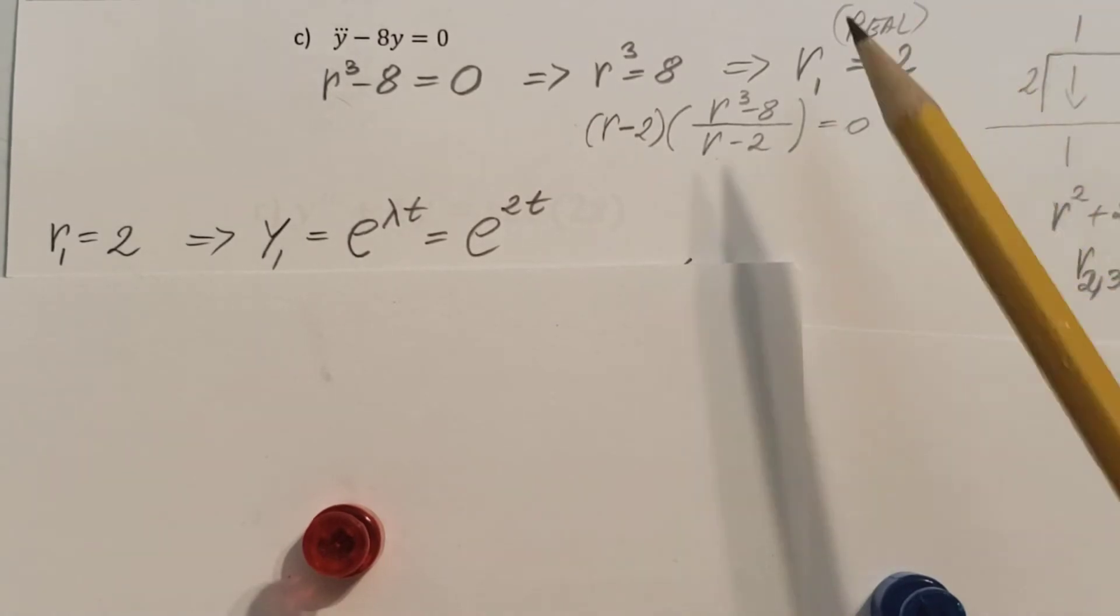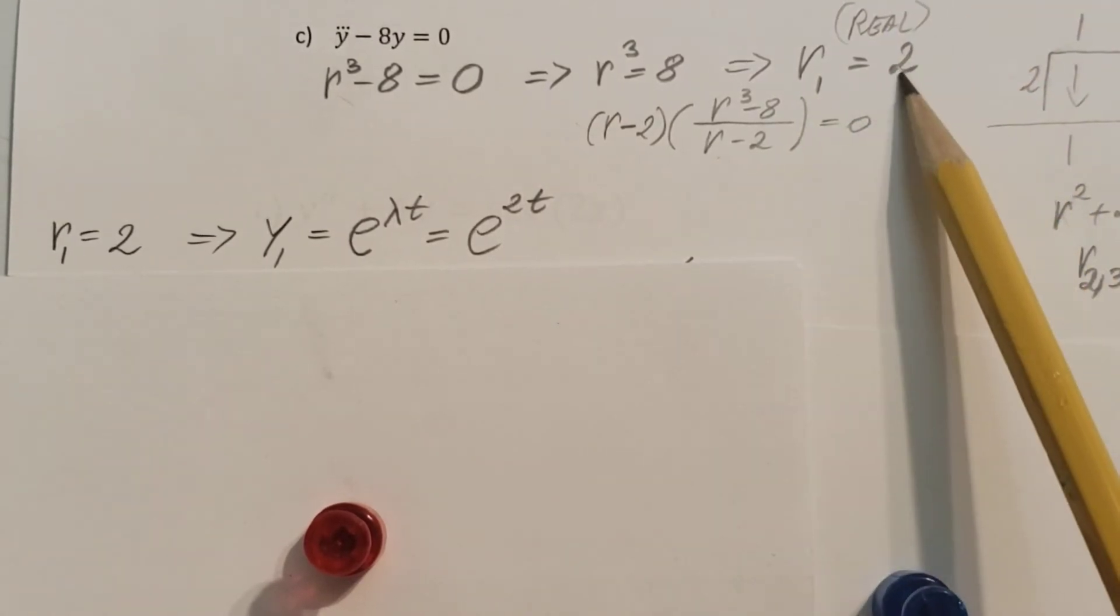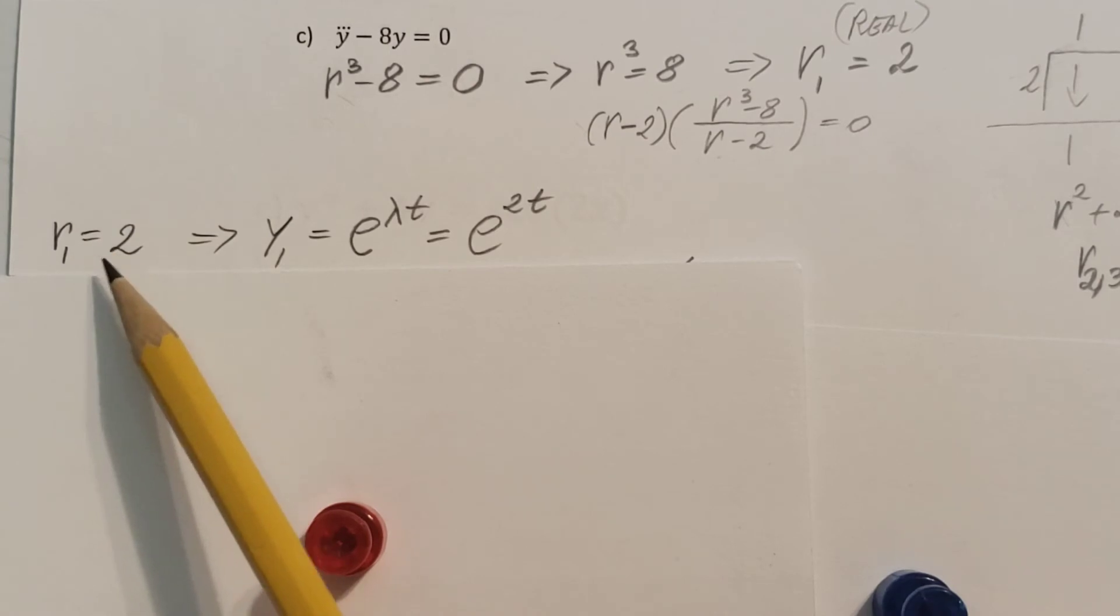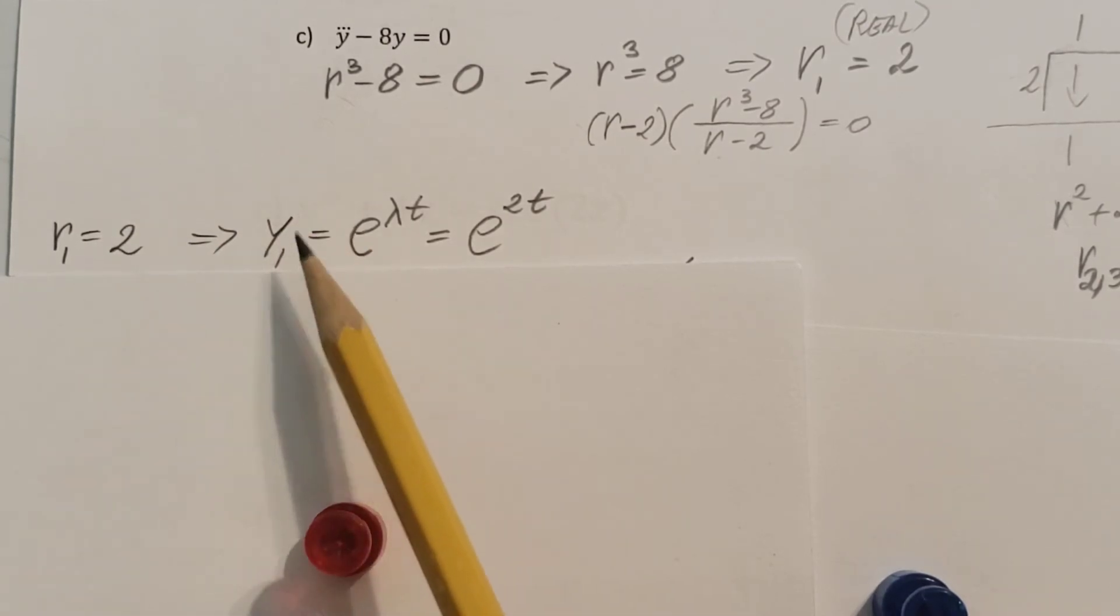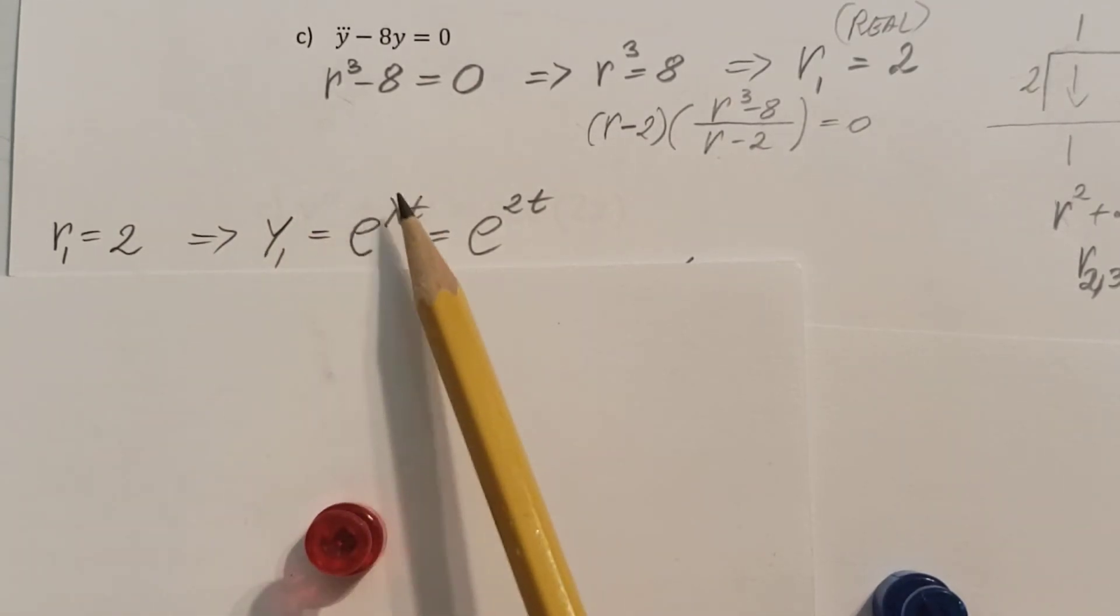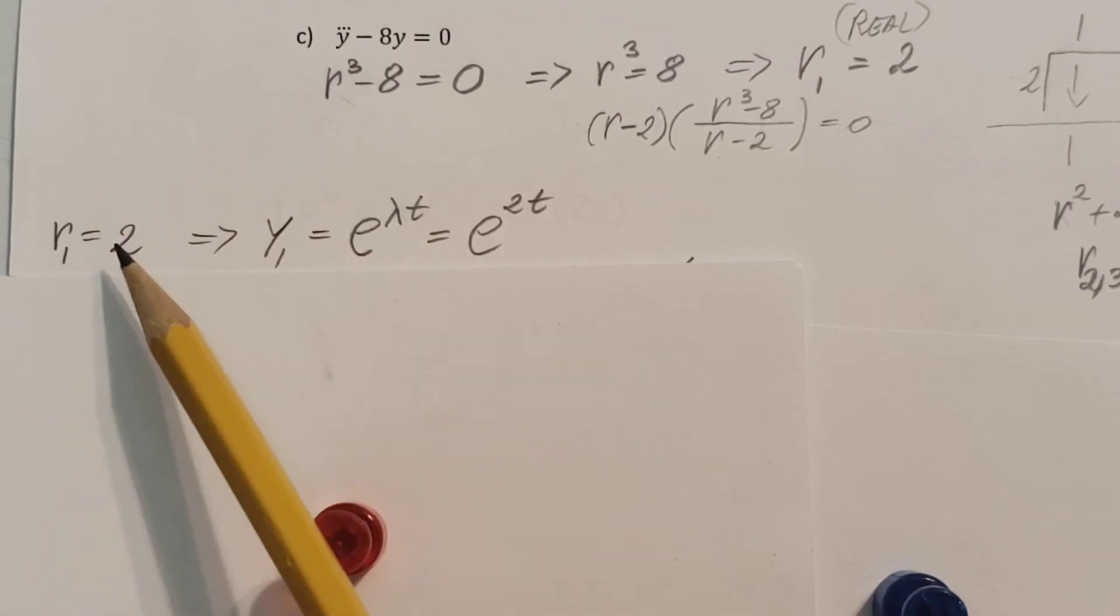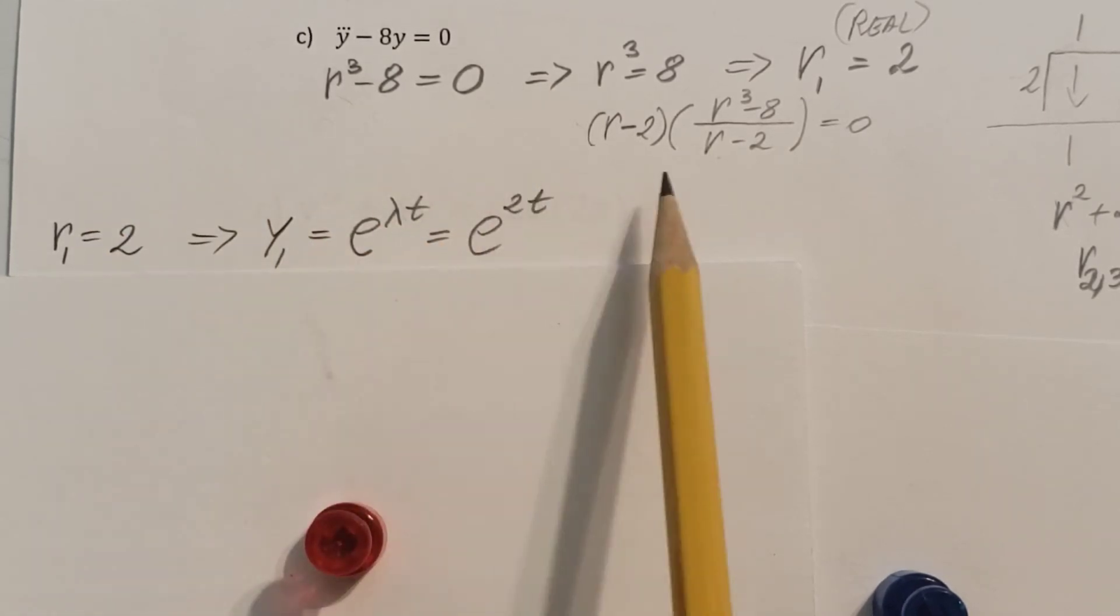So let's take care of our real root first, the number 2. Root 1 equals 2 is going to give us y1, which is simply e to the lambda t, and lambda is my 2, so e to the power of 2t.